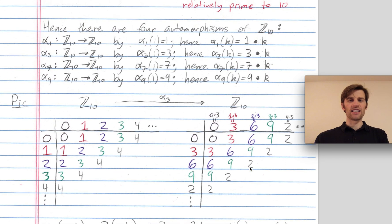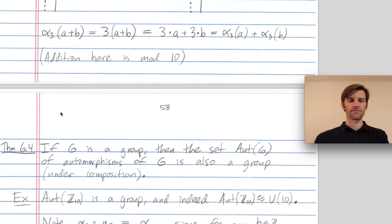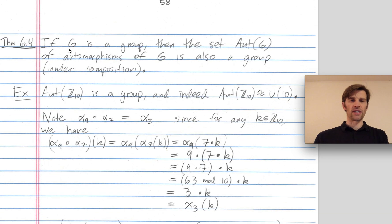If G is Z mod 10, then Aut(G) consists of four elements: Alpha 1, Alpha 3, Alpha 7, and Alpha 9. So G is an arbitrary group, Aut(G) is the collection of all automorphisms of G, and the automorphisms themselves form a group. How do you combine two automorphisms? You compose them.